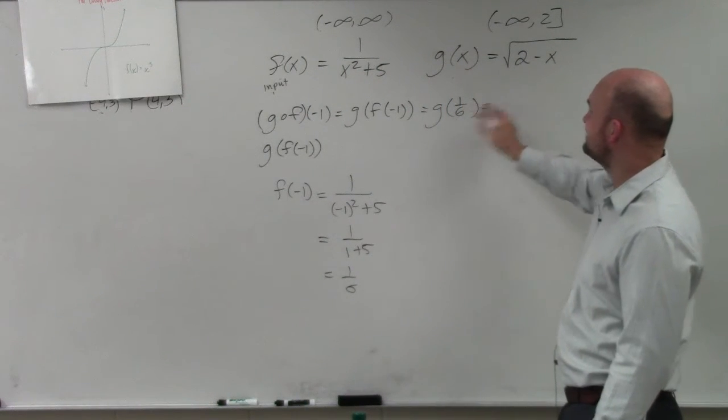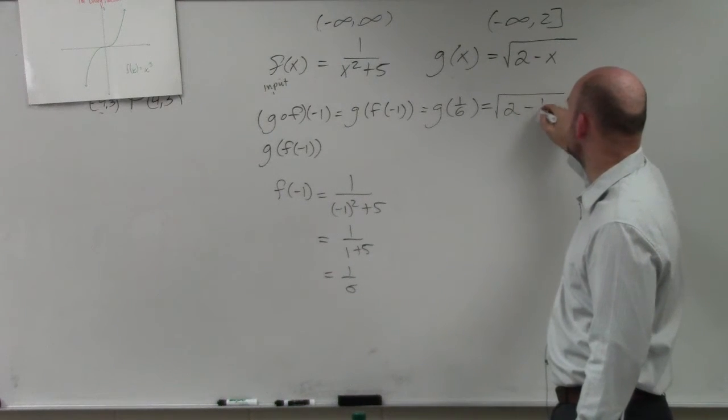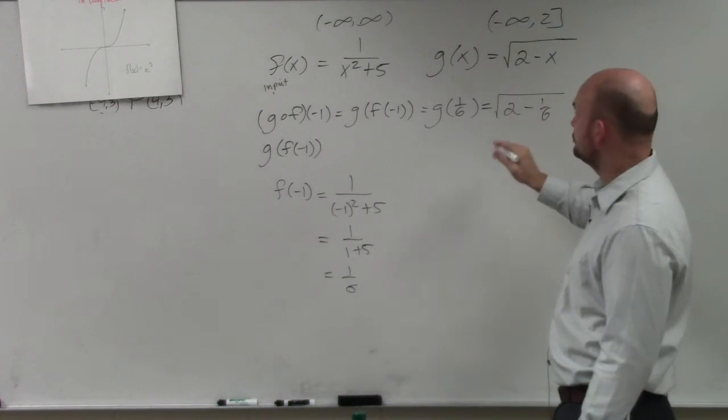So now, g of 1 over 6. You plug in 1 over 6, so you do 2 minus 1 over 6. Ladies and gentlemen, you should know how to simplify this.